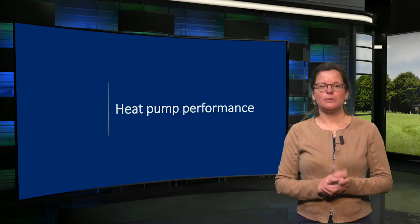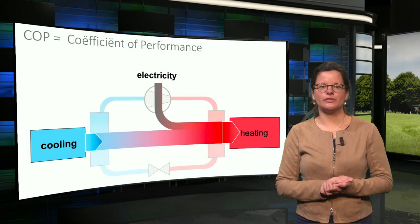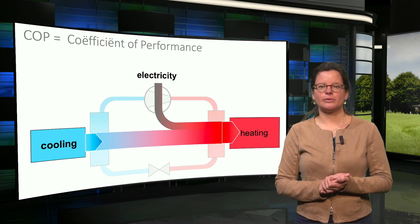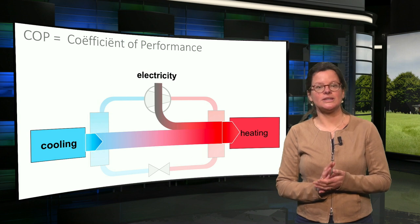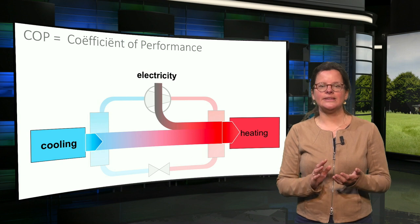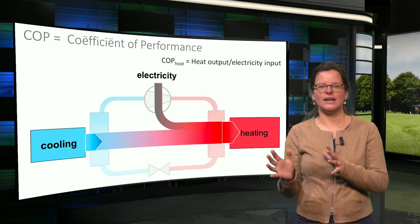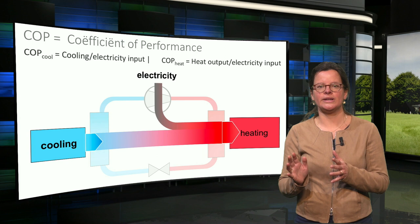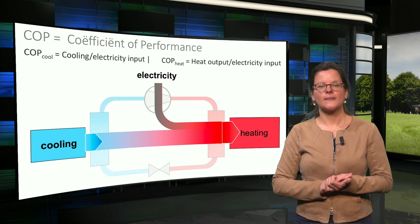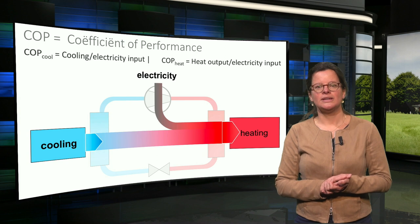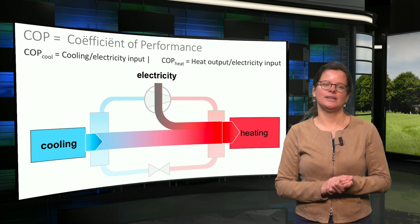Now we will talk about heat pump performance. The heat pump performance is referred to as the COP, the coefficient of performance. In the COP, the free environmental heat or cold used is not included — only the amount of electricity needed is considered. The COP for heating is defined as the heat output divided by the electricity input, and the COP for cooling is defined as the cooling achieved divided by the electricity input. Please note that COPs are usually higher than 100%, which is possible since the free environmental heat is not included in the equation.